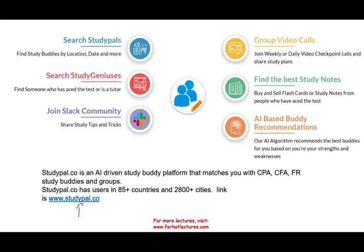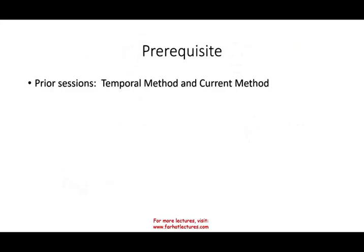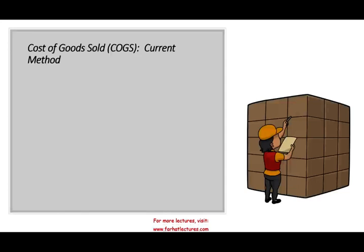Prior to this session, you should be familiar with the temporal method and the current method — we already have two recordings about this, which you could look up in the description. Now let's talk about cost of goods sold. When we're translating cost of goods sold, we have two methods: the current method and the temporal method.